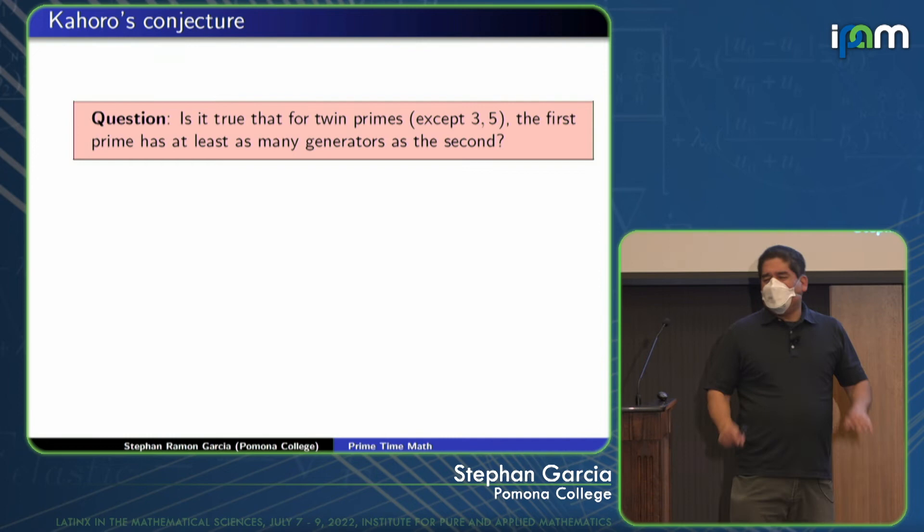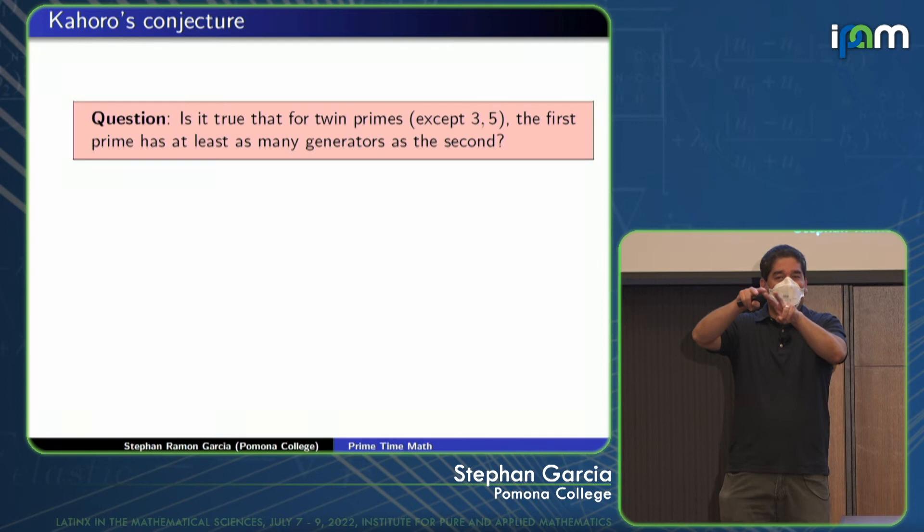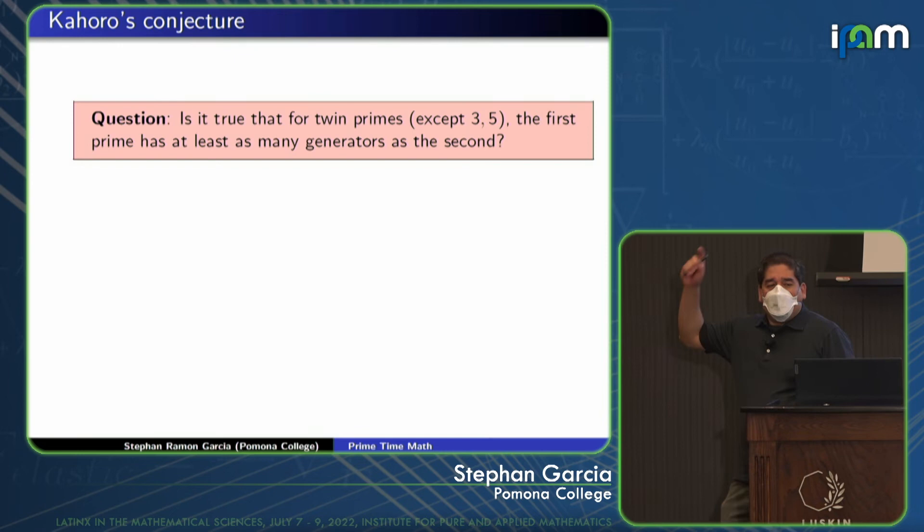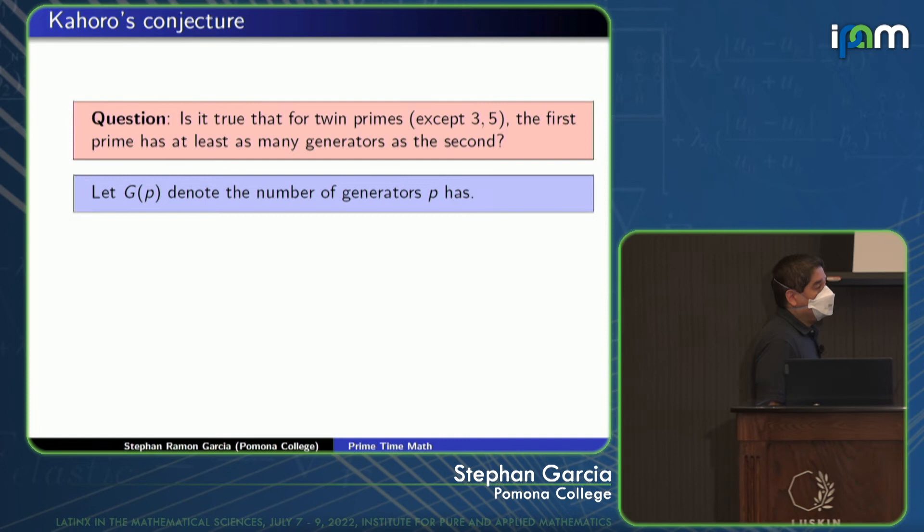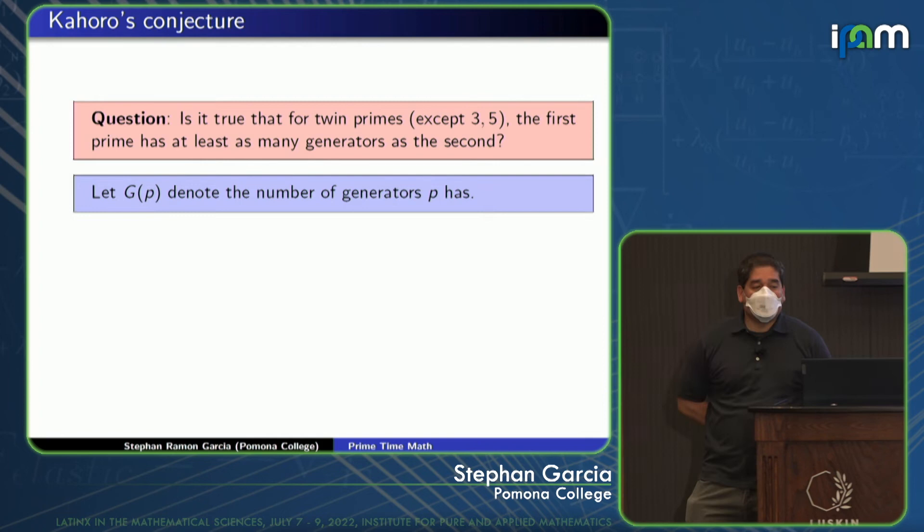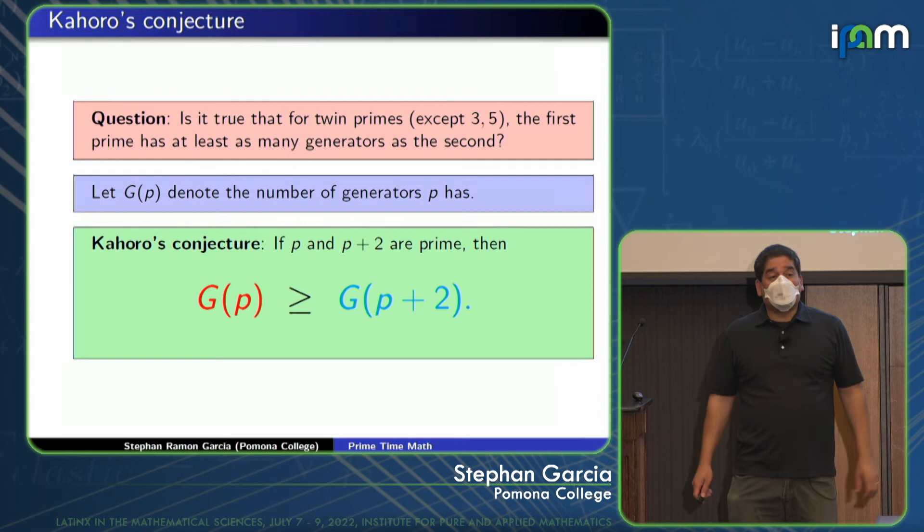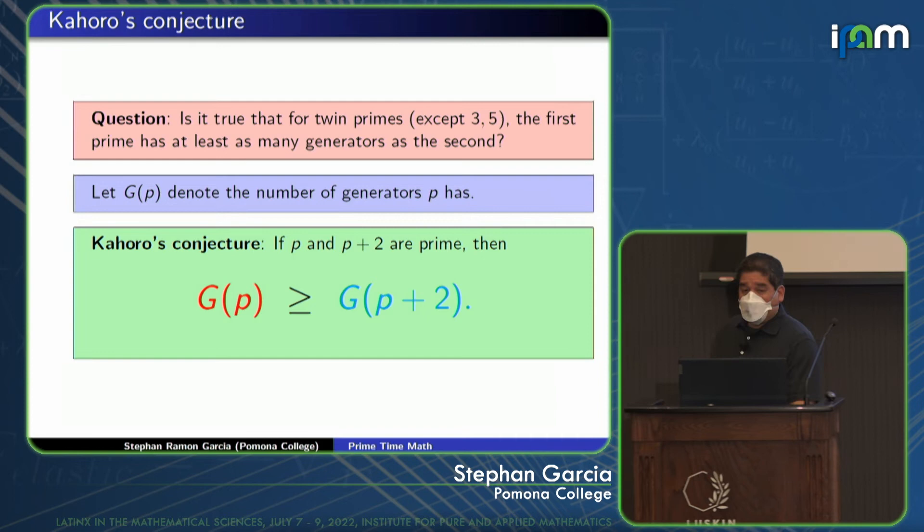So he looked into this. It's an interesting conjecture. Cohoro's conjecture. Is it true that for twin primes, except three and five, because it's a little bit tricky because you've got three, five, and seven. You've got two pairs that are overlapping. So is it true for twin primes, except three, let's ignore the first ones, that when I have a twin prime pair, the first prime has at least as many generators as the second. The red list is at least as long as the blue list. So let G(P) denote the number of generators that prime P has. Number theorists will recognize that this can be phrased in terms of the Euler totient function, but I don't want to burden things with notation. So G(P) is the number of generators, the length of the list corresponding to the prime P. So his conjecture is this, that if I've got twin primes, P and P plus 2, G(P) is greater than or equal to G(P plus 2). The red list is always bigger than the blue list that comes after it. That's the conjecture.